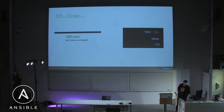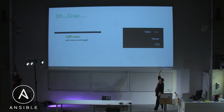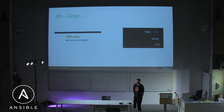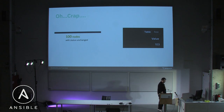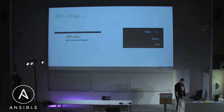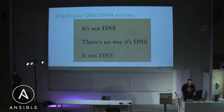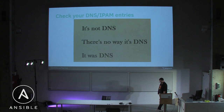A hundred and three in Prometheus, a hundred in Puppet. So now we all know what I'll be doing tomorrow: finding or hunting down those three nodes that do produce metrics somehow but weren't registered correctly.